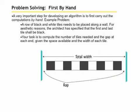So for example, let's take a look at this particular example. We have a row of black and white tiles that need to be placed along a wall. For aesthetic reasons, we want the first and the last tile to be black. So how are we going to do that? Our task is to compute the number of tiles needed and the gap at each end, given the space available and the width of each tile.